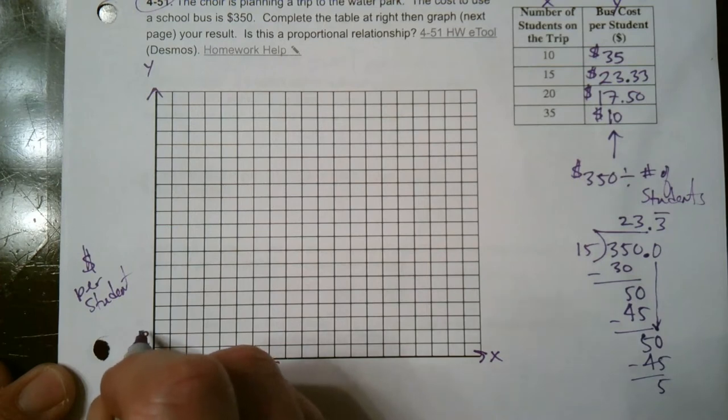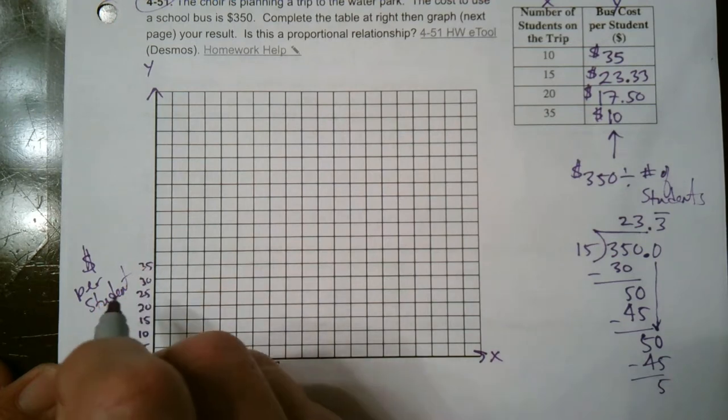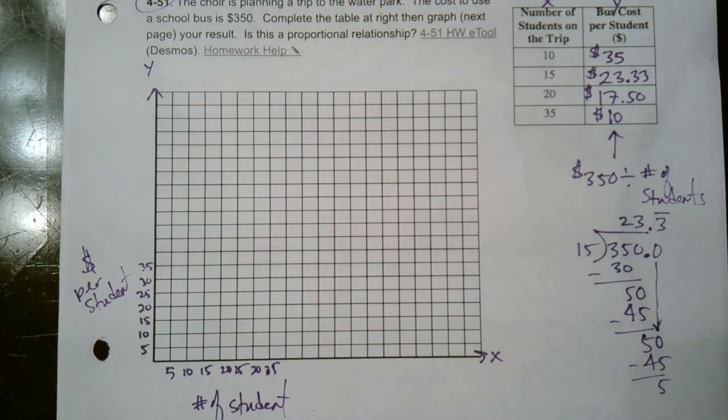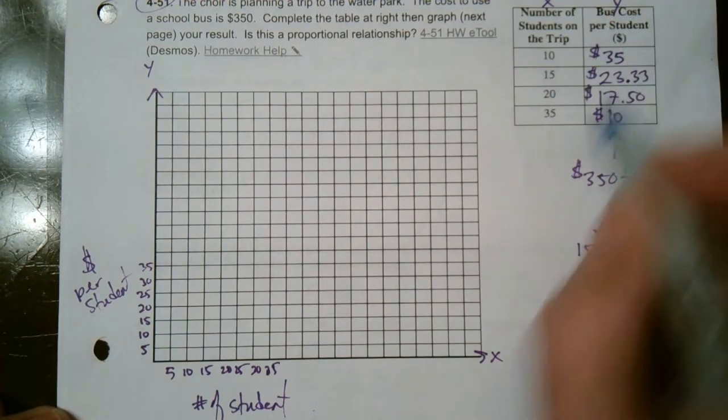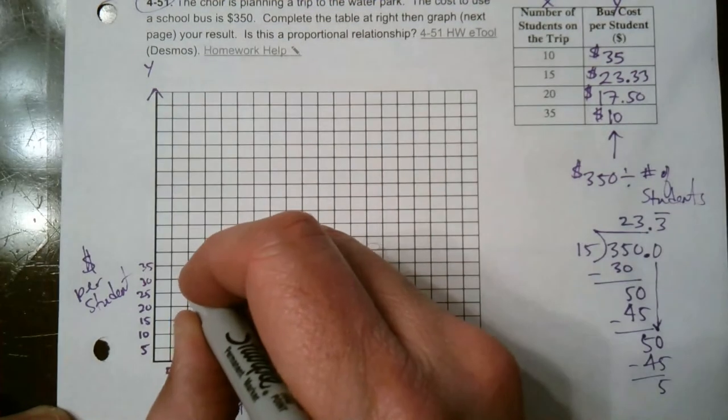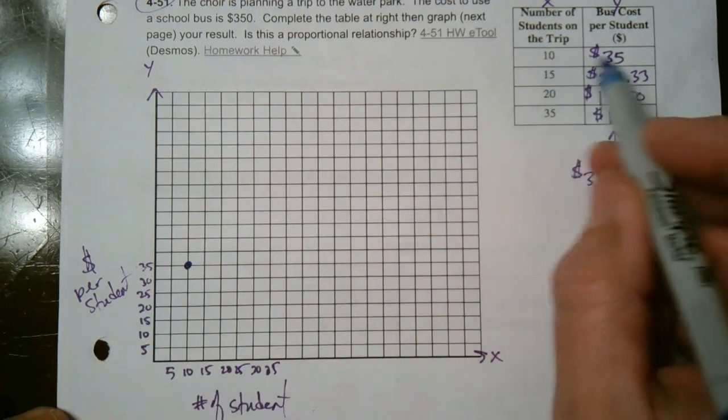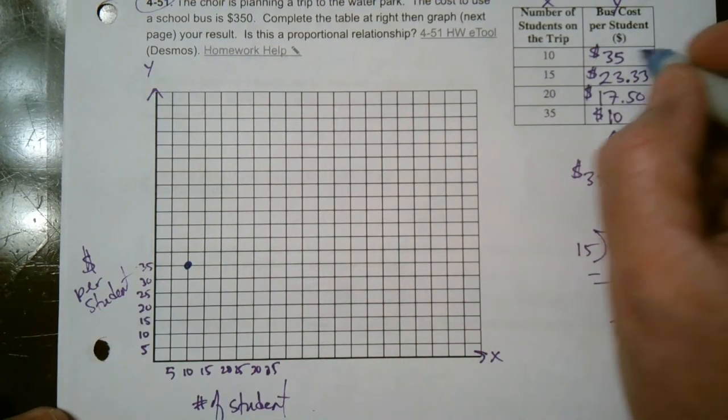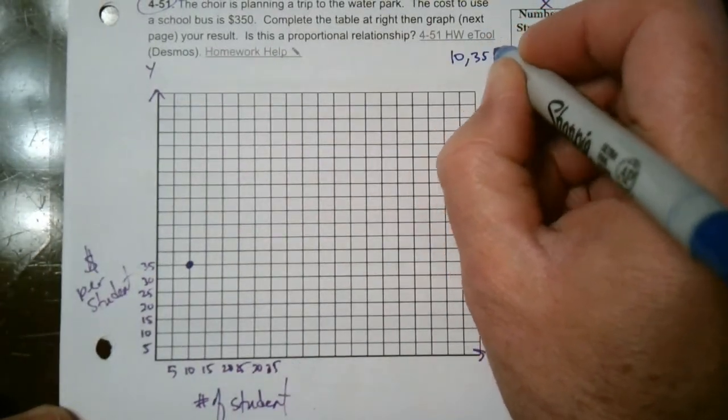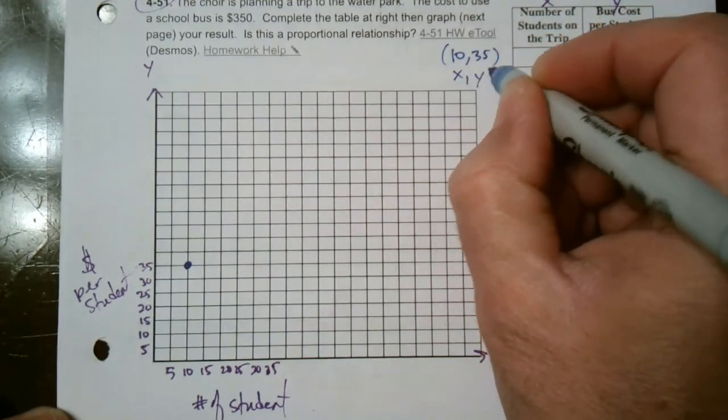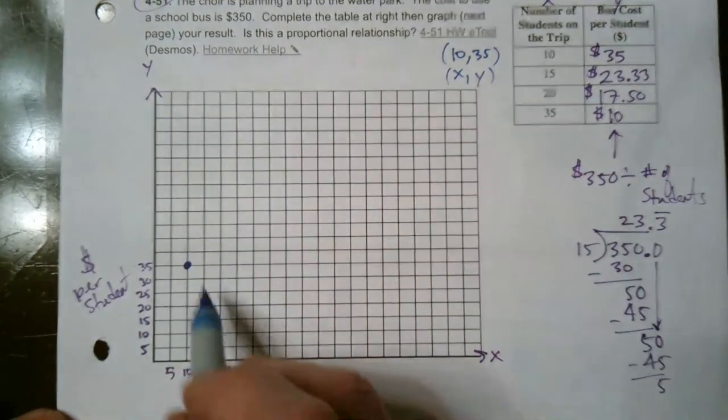So I'm going to go 5, 10, 15, 20, 25, 30, 35. So if we graph this, graph my points, my first point is x is 10, y is 35. So x is 10, y is 35 is right here. These represent points. This here, these two numbers represent 10, 35. That's what that represents, where you have your x, y. So your x is 10, your y is 35. Where is 10, 35? It's right there.